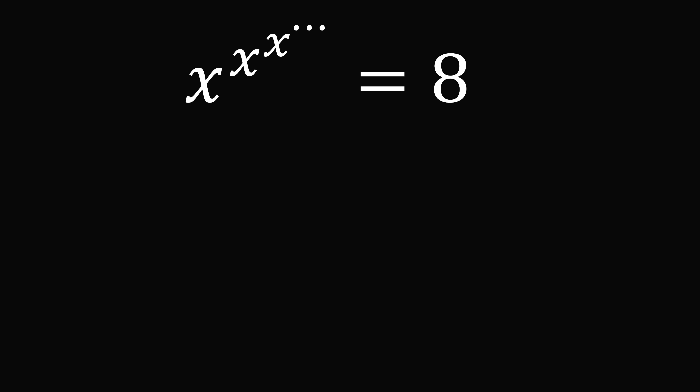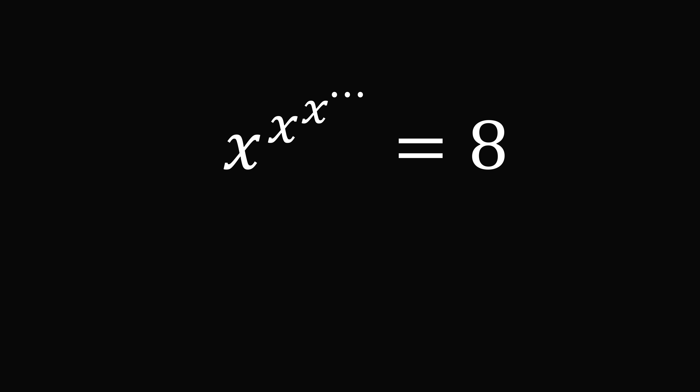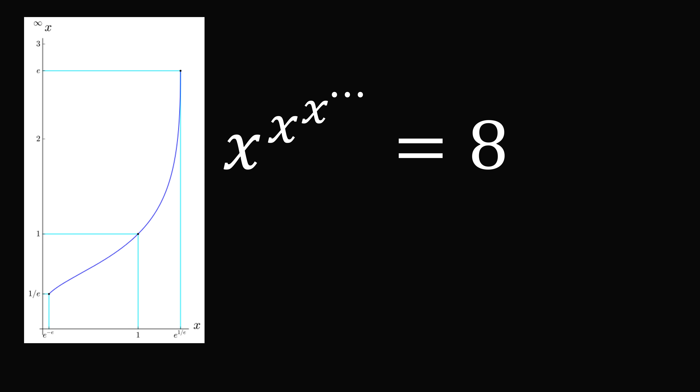Even though it looks like we've made progress, we've run into a problem. This equation actually has no solution. Looking at the graph of x to the power of x to the power of x infinitely many times, there is no solution for this graph being equal to 8. The y-values have a minimum of 1 over e, approximately 0.37, and a maximum of e, approximately 2.72. So you'll never get this equation equaling 8. Somewhere we've made a mistake — but that's okay. When you try to work out a problem, you don't always find the solution right away, but it might inspire a new problem-solving technique.